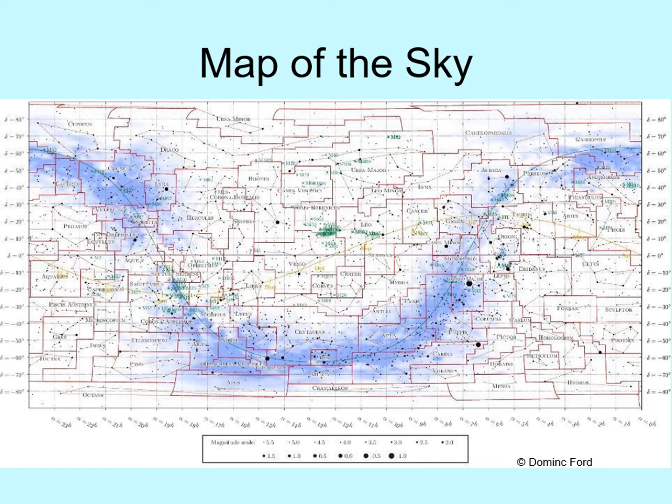Right ascension and declination are also listed on this chart. You can see them labeled on the edges of the map. Minus 90 degrees declination is at the bottom, and plus 90 degrees is at the top. Zero hours right ascension is on the far right side of the screen. Right ascension increases as you move towards the left, ending at 24 hours on the far left side. Just like a map of the entire Earth's surface, this map wraps around so that the far left and far right edges meet up together.